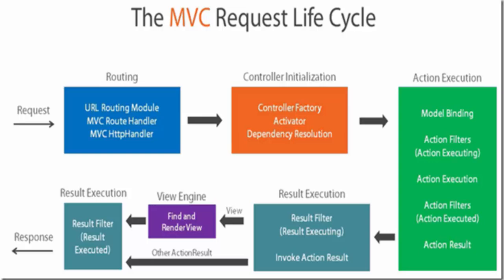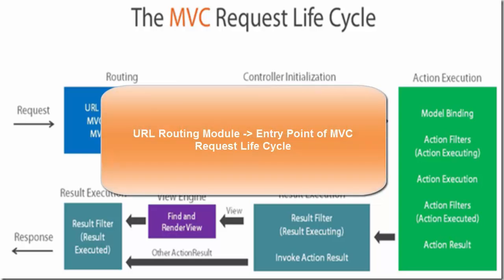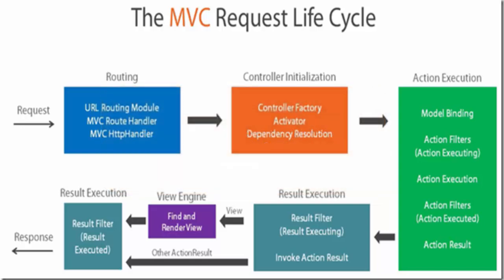The entry point of the ASP.NET MVC request lifecycle is the URL routing module. The incoming request from the IIS (Internet Information Server) pipeline is handed over to the URL routing module, which analyzes the request and looks up the routing table to figure out which controller the incoming request is mapped to. The routing table is a static container of routes defined in an ASP.NET MVC application, with corresponding controller and action mappings.